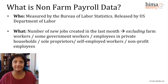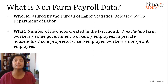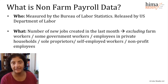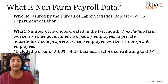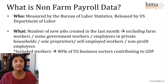Now, this is unique data because it's named for what it doesn't include. The biggest piece being farm employees and farm workers. It also does not include some government workers, employees in private households, sole proprietors or self-employed workers, and non-profit employees. The included workers make up 80% of the U.S. business sectors that contribute to the GDP — the gross domestic product, essentially a measure of the output and productivity of the U.S. That's why this number is so valuable, even though it leaves out those other groups.